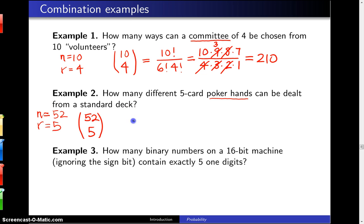That turns out to be 52 factorial divided by 47 factorial times 5 factorial.